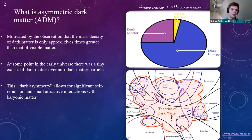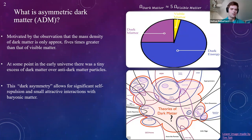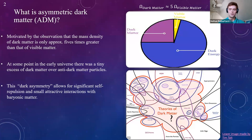This similarity in the observed densities of dark matter and baryonic matter suggests a strong connection in cosmic history between the two. Like the long-established baryonic asymmetry, at some point in the early universe there was a tiny excess of dark matter over anti-dark matter particles. The dark matter today constitutes that excess after all anti-dark matter particles were annihilated. This dark asymmetry allows for significant self-repulsions between dark matter particles and attractive interactions between dark matter and baryonic particles. We need a repulsive self-interaction to prevent the dark matter core from collapsing into a black hole and devouring the neutron star.